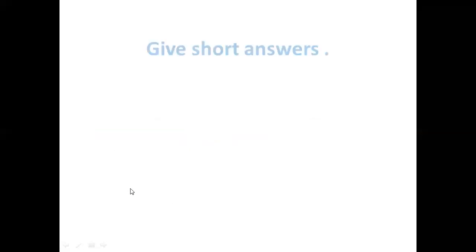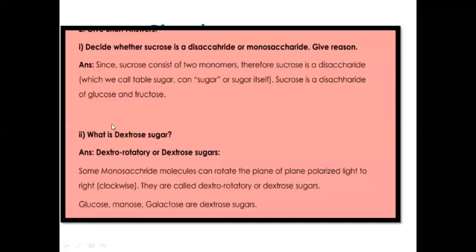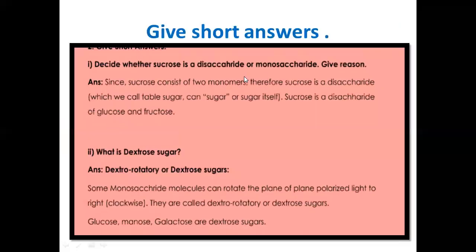Coming to the short question answers. Question one: decide whether sucrose is a disaccharide or monosaccharide. Sucrose — which is the common table sugar — is made up of two sugar units: glucose and fructose. So it is a disaccharide. It is made up of glucose and fructose.